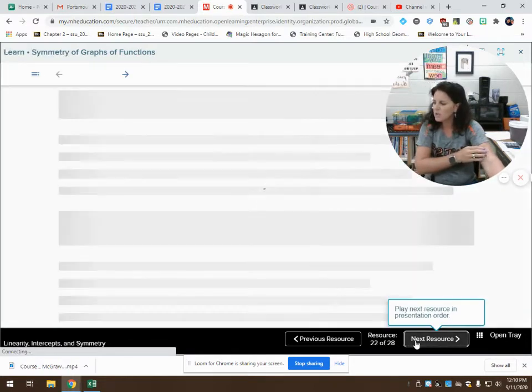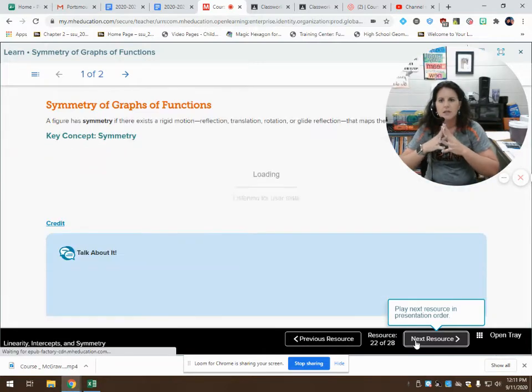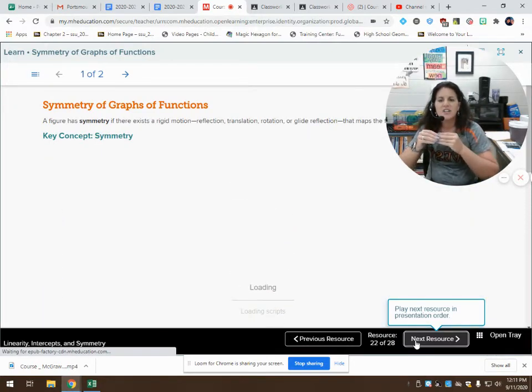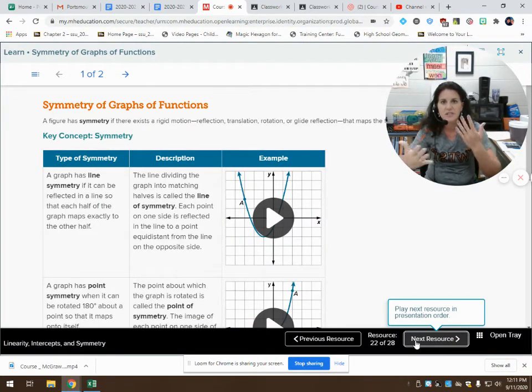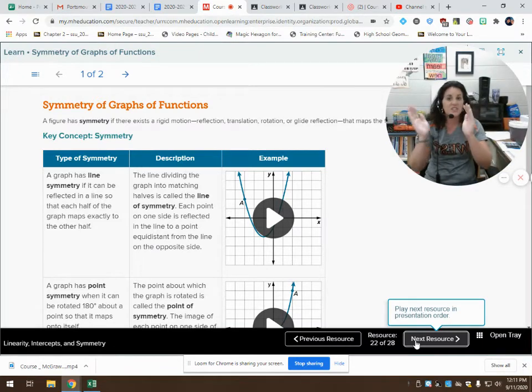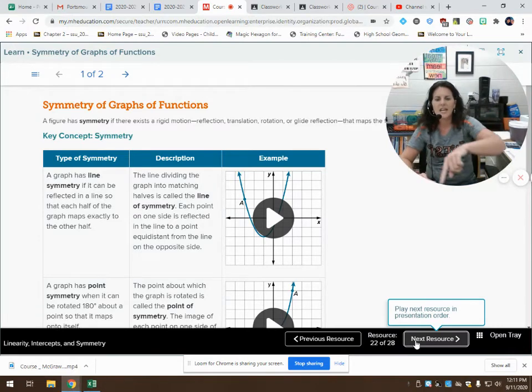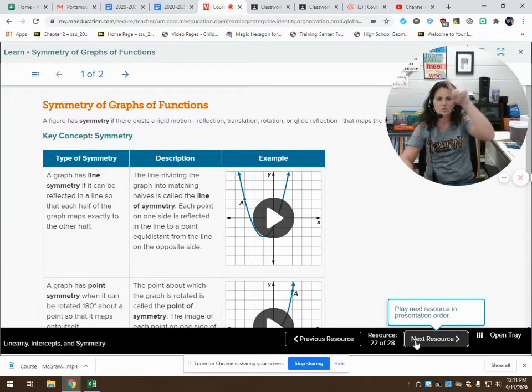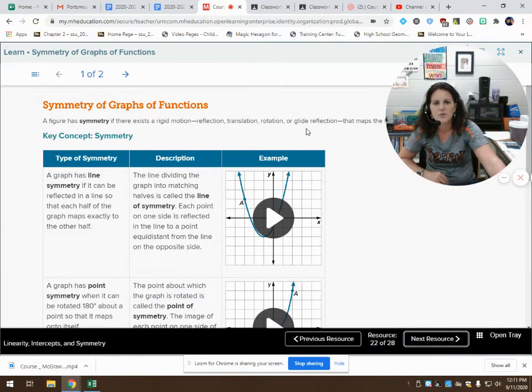And now we're going to talk about some symmetry, symmetry of graphs of functions. A figure has symmetry if there exists a rigid motion, such as a reflection. We all know what a reflection is. Looking at ourself in the mirror gives us a reflection. A translation, that's when something slides around, slides up or slides down or to the right or to the left. A rotation is when it flips or circles. A rotation is a turn.